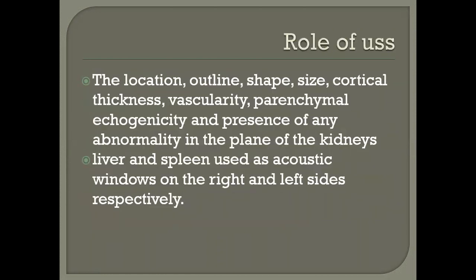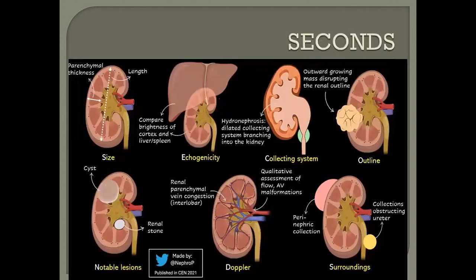The role of ultrasound in HIVAN is to locate and outline the kidneys — their shape, size, cortical thickness, vascularity, parenchyma or echogenicity, and presence of any abnormalities in the plane of the kidneys. We do a comparison of the parenchyma or echogenicity of the kidneys with respect to the liver and the spleen. We apply what we call the SECONDS acronym.